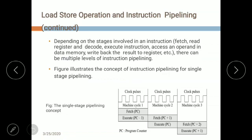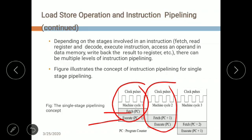Depending on the stages involved in an instruction — fetch, read register, decode, execute, access operand in data memory, and write back result to register — there can be multiple levels of instruction pipelining. The figure illustrates single-stage pipelining: during the first machine cycle, while fetching the current PC instruction, the previous instruction PC-1 is executing. In the second cycle, while executing the PC instruction, the next instruction PC+1 is being fetched. In the third cycle, while executing PC+1, instruction PC+2 has already been fetched.